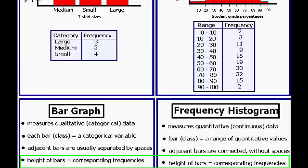In both the case of the bar graph as well as the frequency histogram, the height of the bars corresponds to the respective frequencies, and this is a major distinction between a frequency histogram and a frequency density histogram, which we'll touch on in part two of this series.